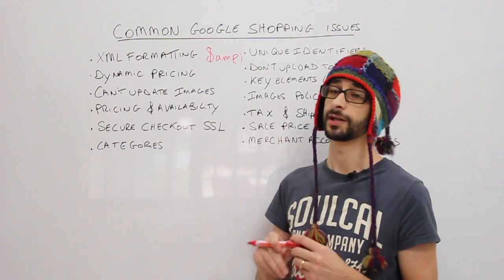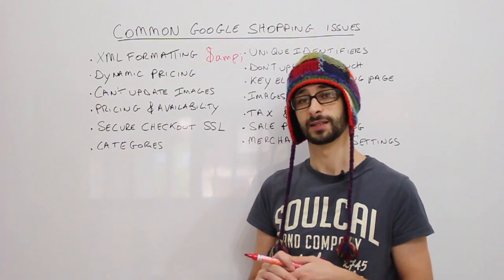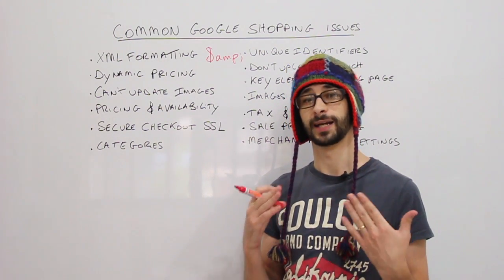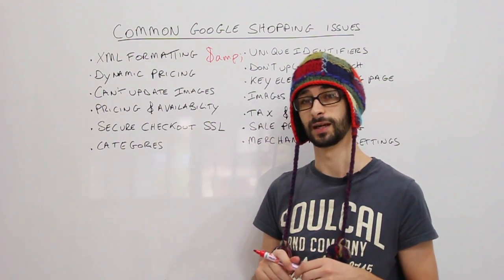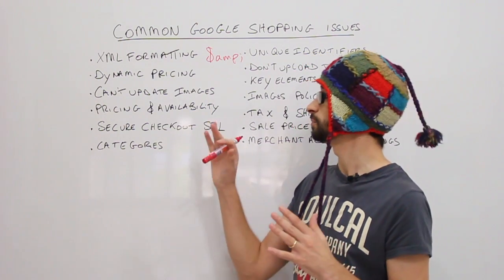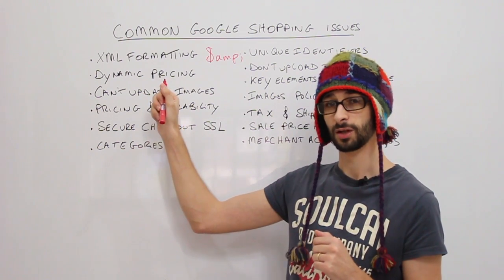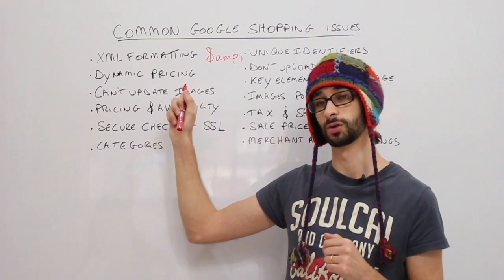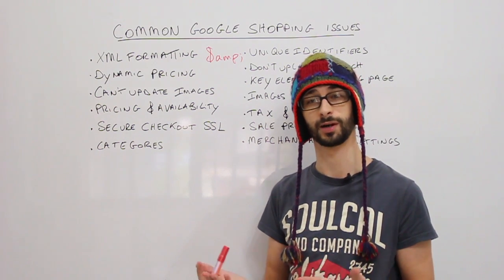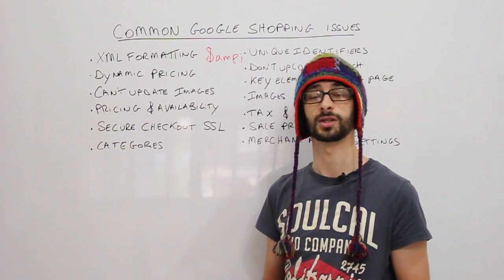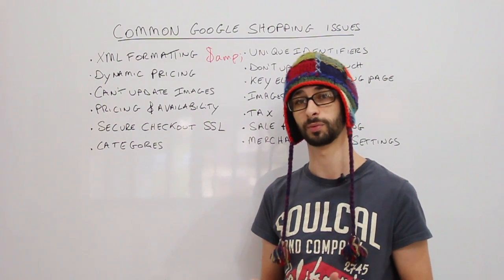The second issue is dynamic pricing. Once you've submitted your feed, it is possible that a dynamic pricing issue may arise. This is basically when Google cannot see what the pricing is on your website — for example, if you have multiple prices available such as a recommended retail price, a sale price, and a normal price.